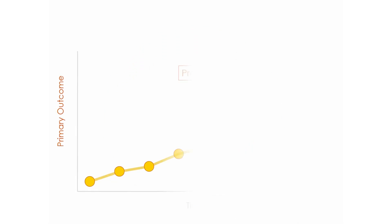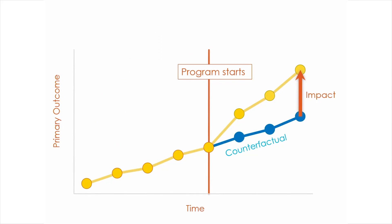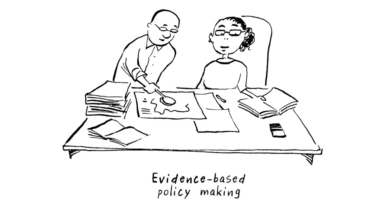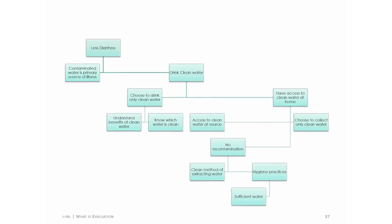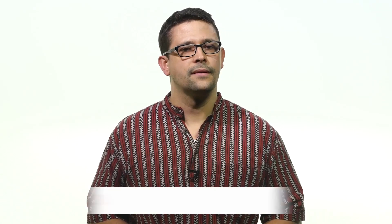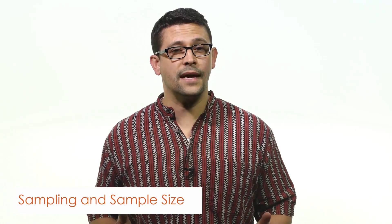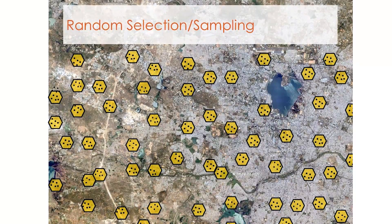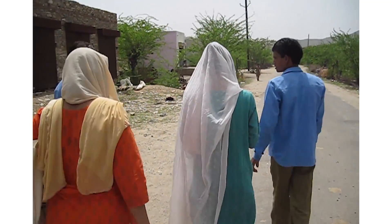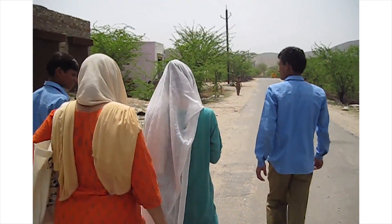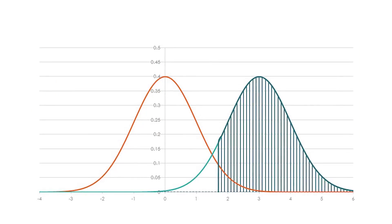First, designing randomized evaluations, where we tackle the questions: What is evaluation? What is the purpose of evaluation in general? And what is the theory behind our evaluation question? Second, selecting a sample: How do we figure out who will participate in the study? How do we find them? And how large should our study be?